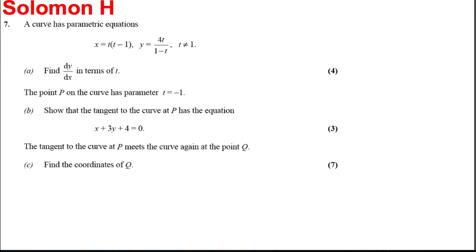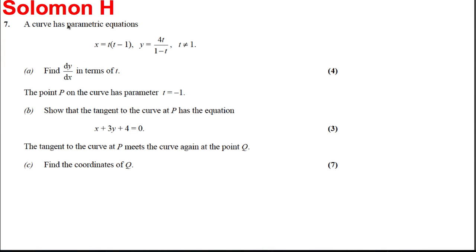We've got some parametric equations here. Our parametric equations are x equals t multiplied by t subtract 1, and y is equal to 4t divided by 1 subtract t. We're told that t can't be equal to 1. We're asked to find dy by dx in terms of t.